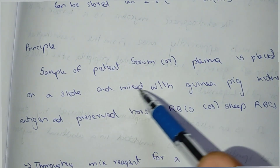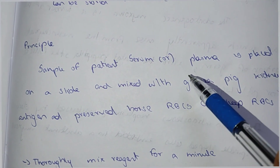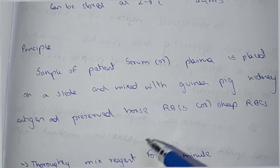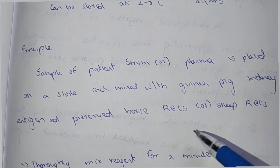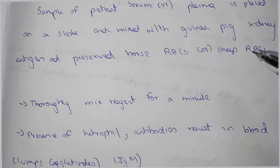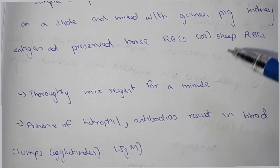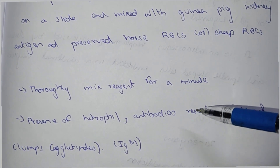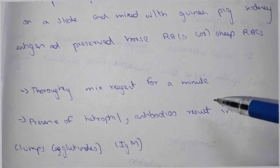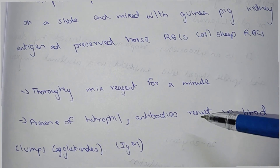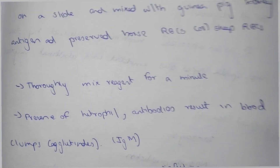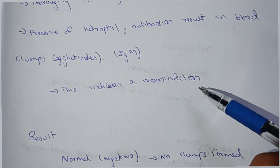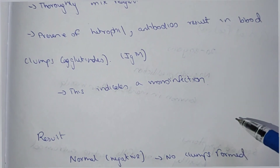You take the serum or plasma sample on a slide, then mix in the guinea pig antigen and sheep red blood cells, mixing all three together thoroughly. If heterophile antibodies are present in the blood, agglutination is shown; if absent, no agglutination occurs. This is how the test is performed and it indicates infectious mononucleosis.